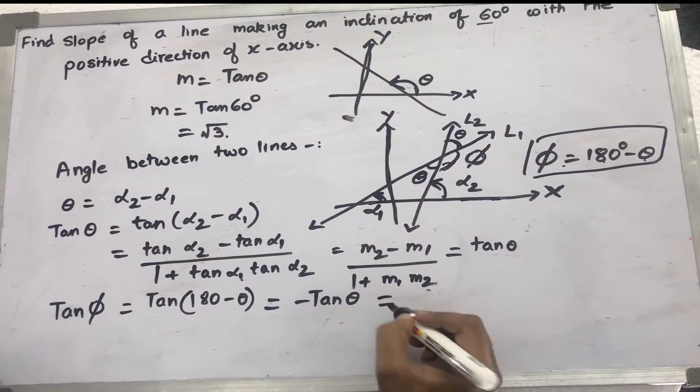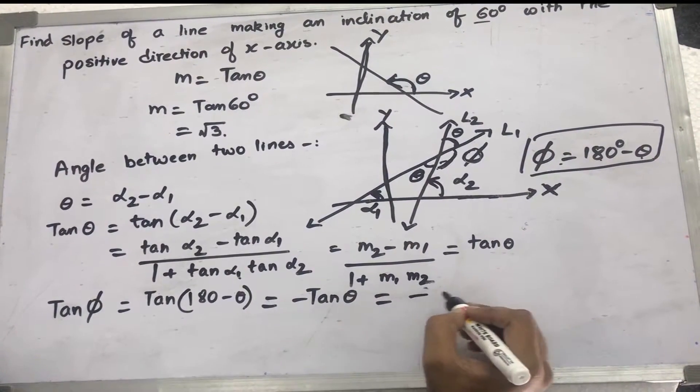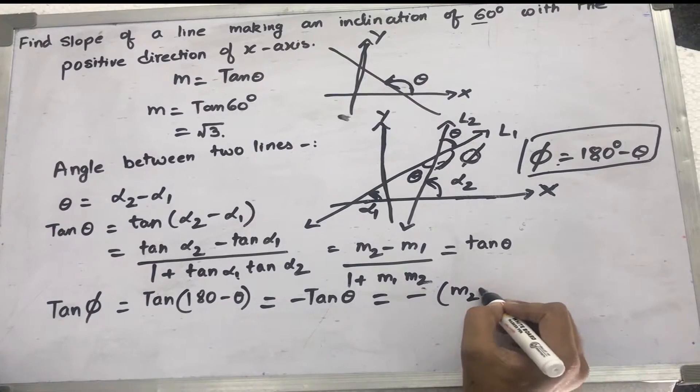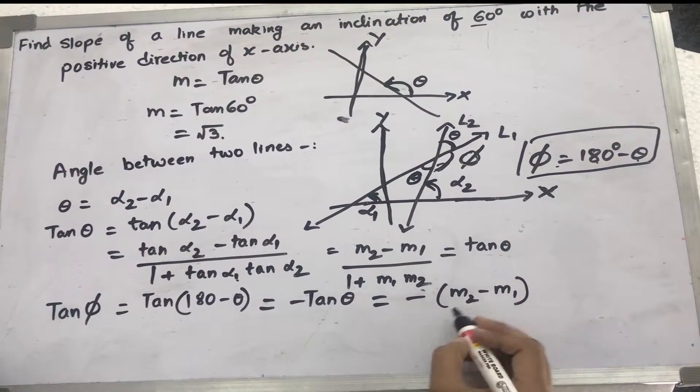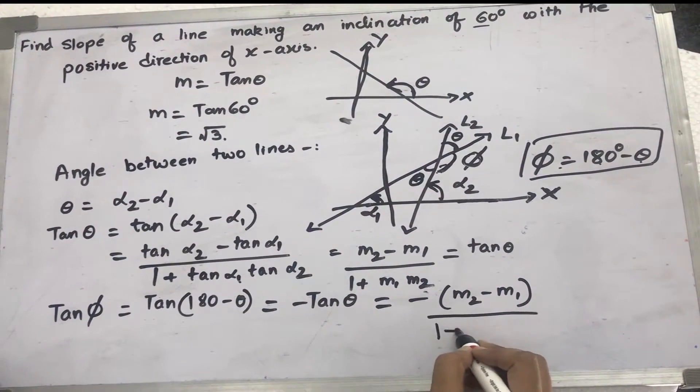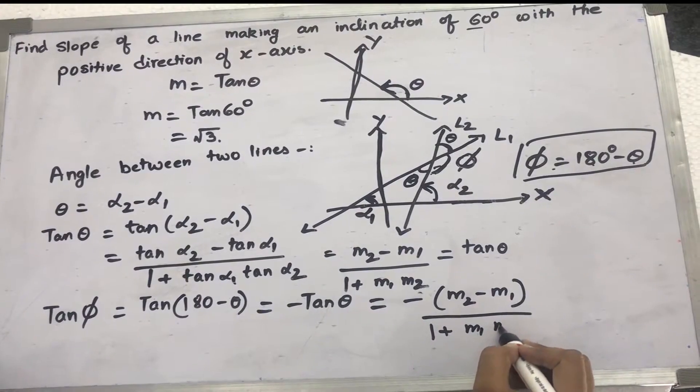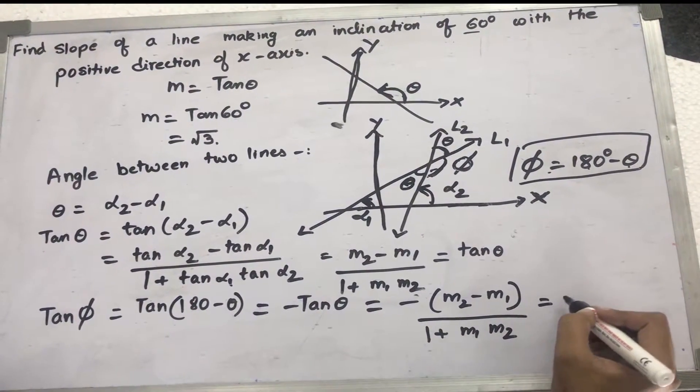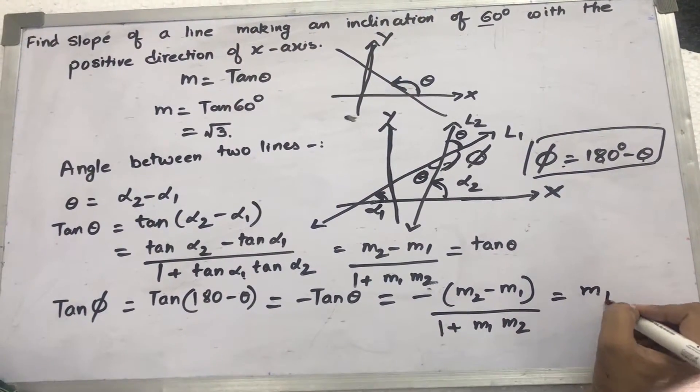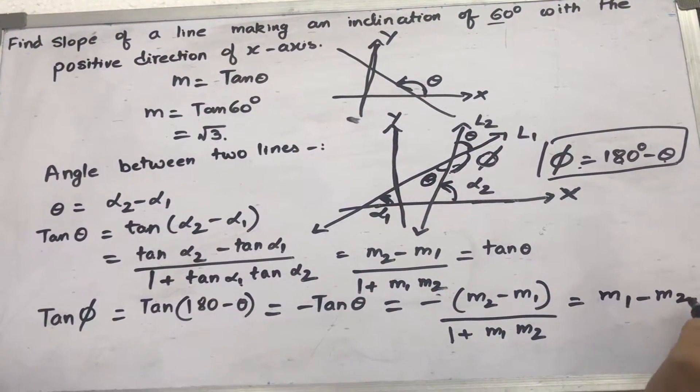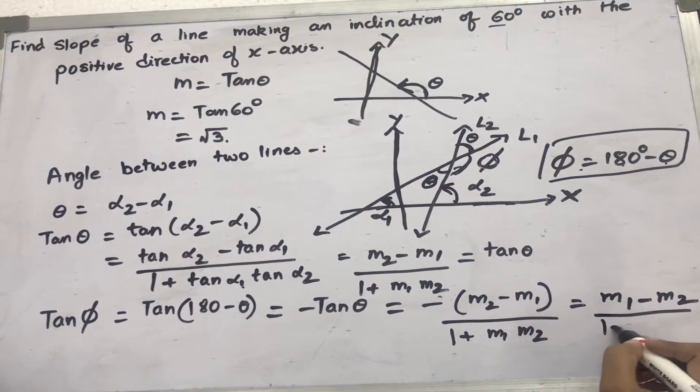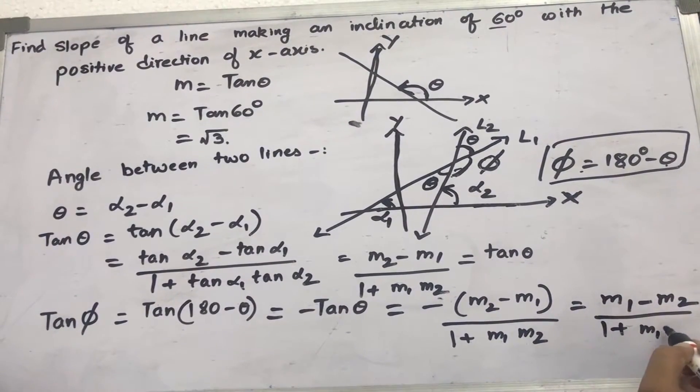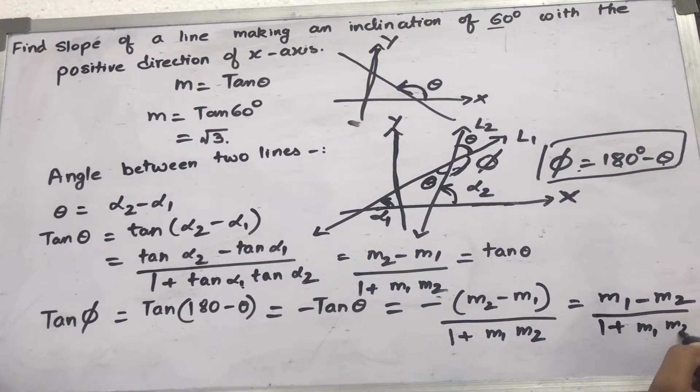So which is equal to minus of m2 minus m1 divided by 1 plus m1 m2, which equals m1 minus m2 divided by 1 plus m1 m2.